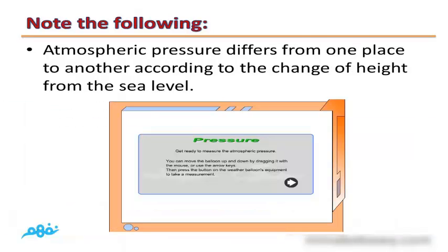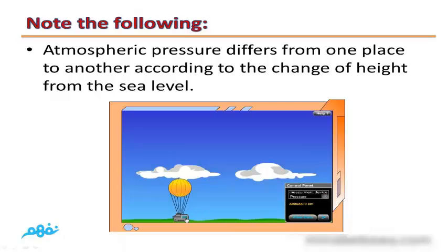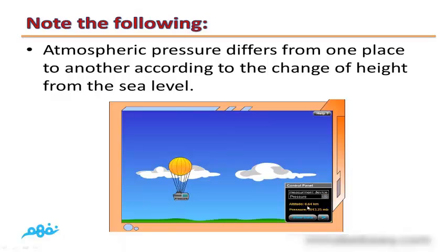Atmospheric pressure differs from one place to another according to the change of height from sea level. As shown in this demo, if we have a balloon, its pressure at sea level is 1013.25 mb. By increasing its elevation to about 10.64 km, its pressure decreases to 324.24 mb. By increasing the height to about 21 km, its pressure decreases to about 45 mb.